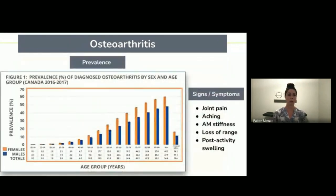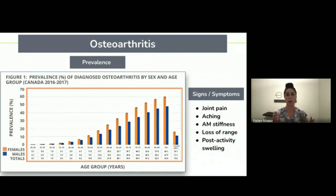So how common is OA? This graph shows the prevalence with age. As a whole, in everyone 20 and older, it affects about 14% of Canadians. The prevalence increases with age and affects upwards of 40% of older adults with OA.